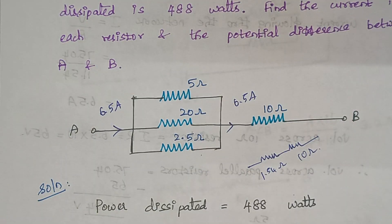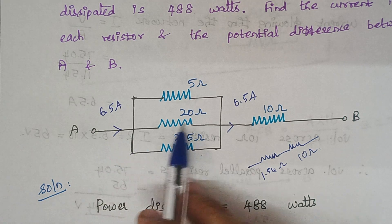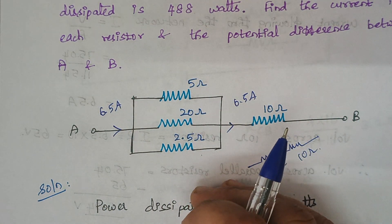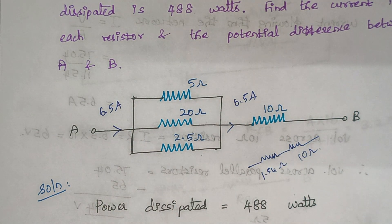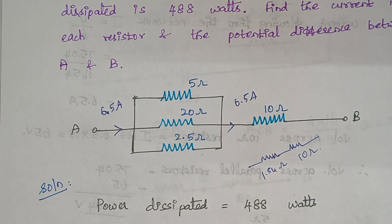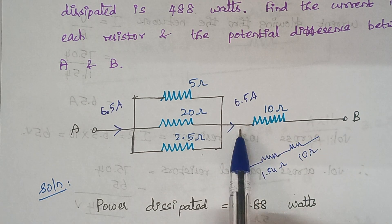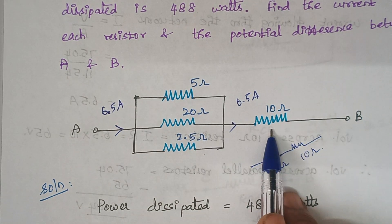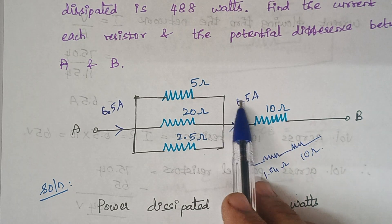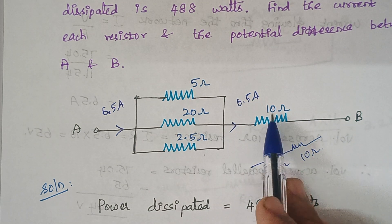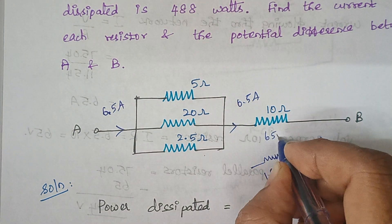Now go back to the circuit. The current flowing through this circuit is 6.5 amps. Because we had calculated total resistance and we had calculated the voltage, from the knowledge of V and R we had calculated the value of current. The value is 6.5 amps. From this knowledge, we can easily calculate the voltage drop across this 10 ohm resistor. The voltage drop across this 10 ohm resistor will be 6.5 into 10, which is nothing but 65 volts.